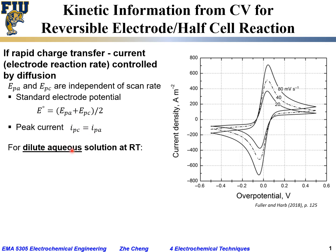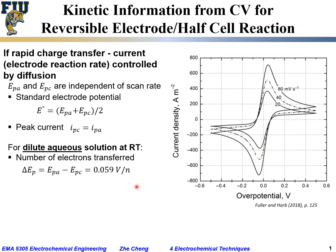For a dilute aqueous solution at room temperature, 28 degrees C, and considering the number of electrons transferred: what people find is that the separation between the anodic oxidation peak and the cathodic peak is 0.0592 volts divided by n, the number of electrons transferred. So from the CV curve, even if you don't know how many electrons are transferred, the separation between the two peaks tells you n for this half-cell or electrode reaction.